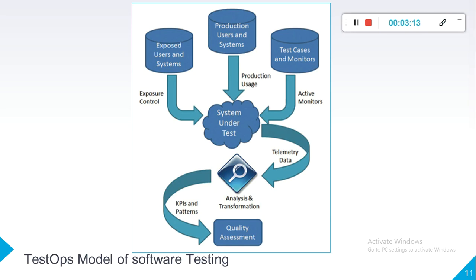So we now have three methods: first, deploy the application only for a subset of users and collect data; second, use continuous monitoring tools like Kibana and Crashlytics; and third, test execution — either manual or automated. We collect data from these three different sources, analyze it, and on the basis of KPIs and patterns, we identify the quality of our system.